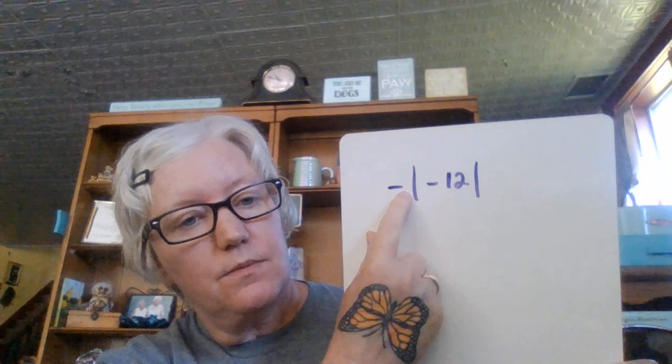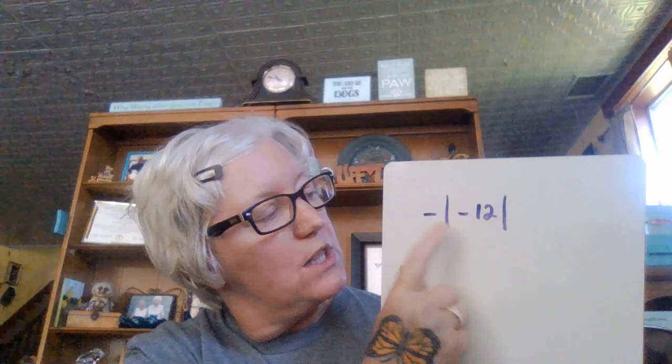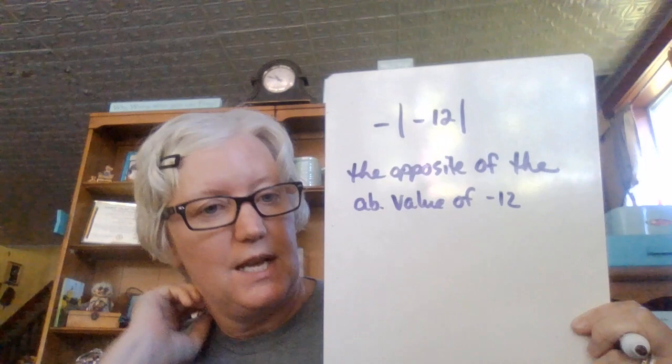Now sometimes it gets a little tricky if you've got a negative on the outside of your bracket. Let's say I wanted to do this. Well, there's an invisible one right here. So this is technically, you can think of this as two different things. You could think of it as negative one, because there's an invisible one out there, negative one times the absolute value of negative 12. Or you can think of this on the outside as the opposite of. So I would think of this as the opposite of the absolute value of negative 12. That's how I would think of it. But you can certainly think of it as negative one times the absolute value of negative 12.